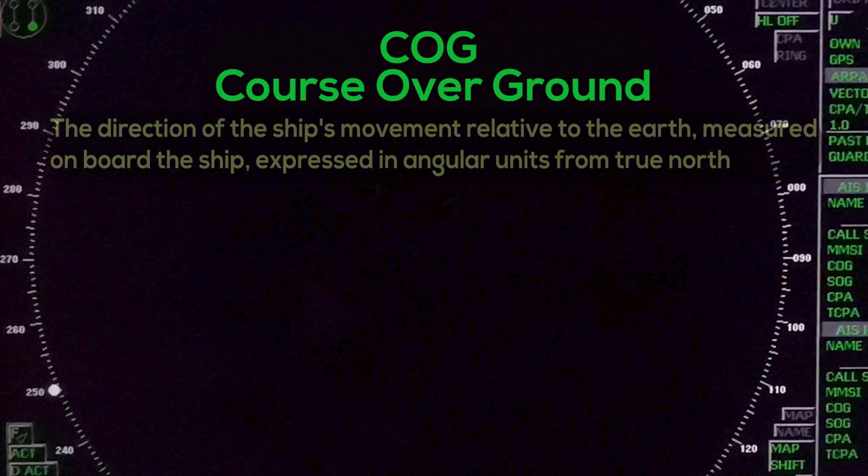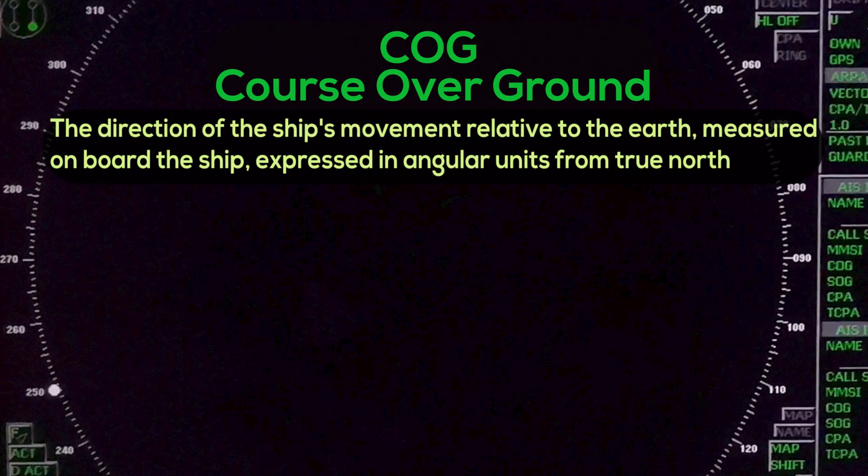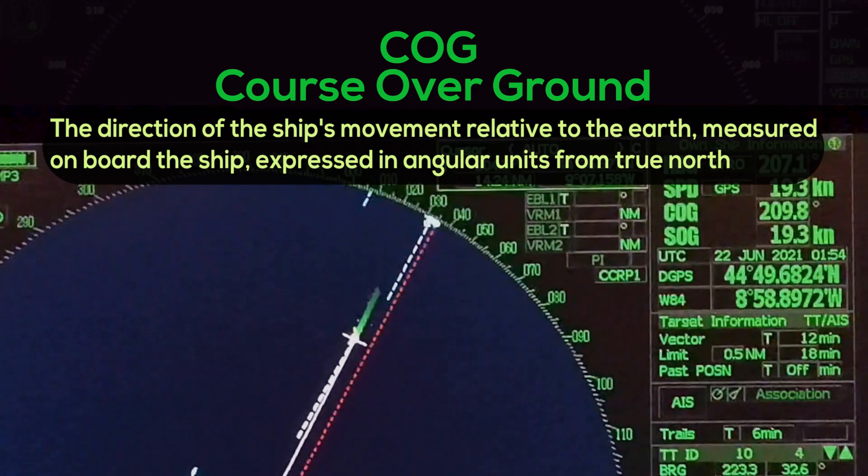COG — Course Over Ground: The direction of the ship's movement relative to the Earth, measured on board the ship, expressed in angular units from true north.